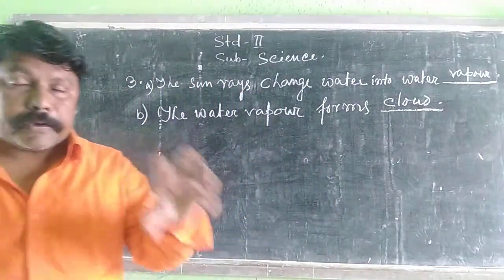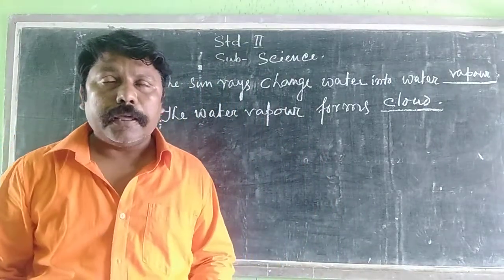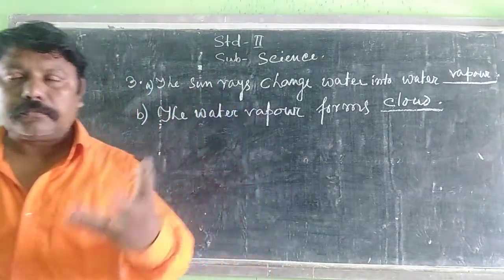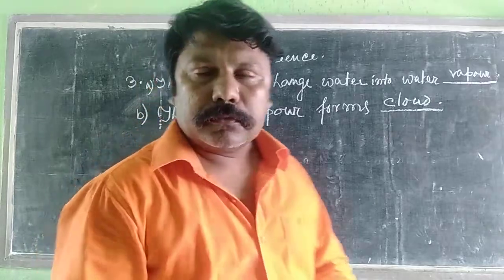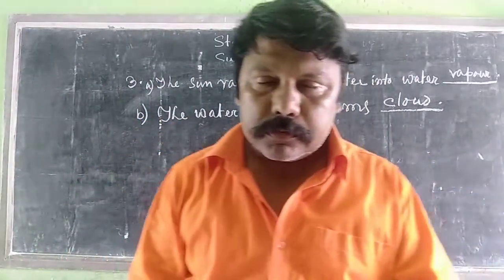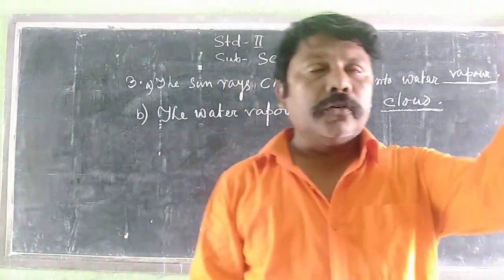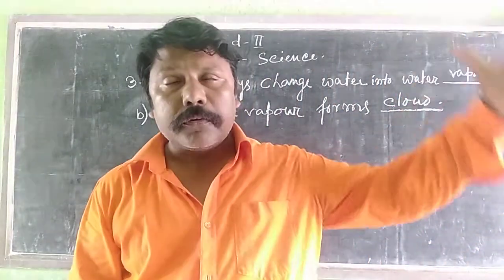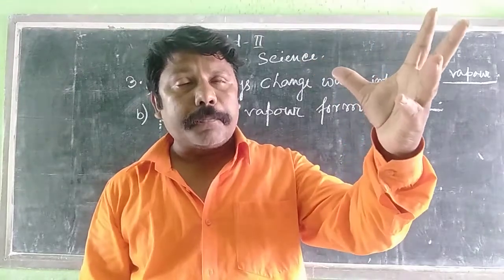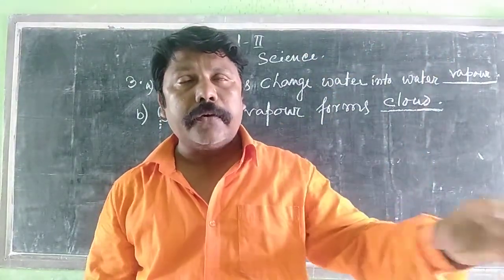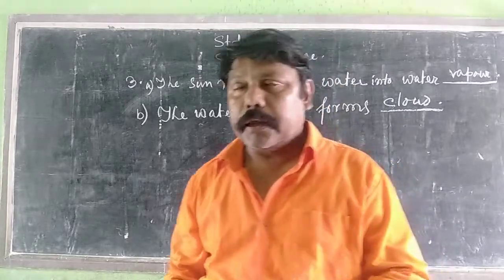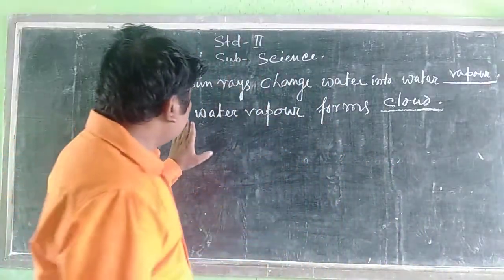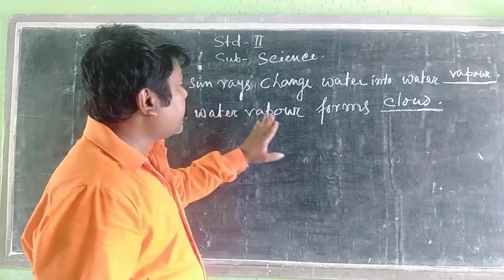When the sun hits the surface water, lakes and rivers, it evaporates and the vapour goes into the sky. When the water vapour cools and the surrounding air cools, then it forms a cloud. So we say that water vapour forms cloud.